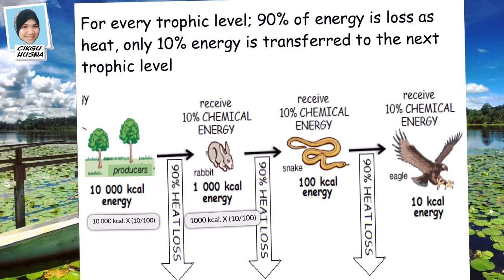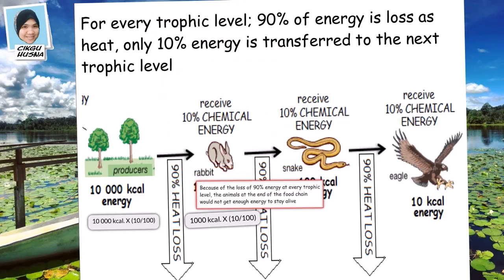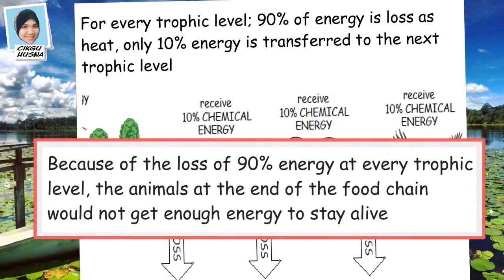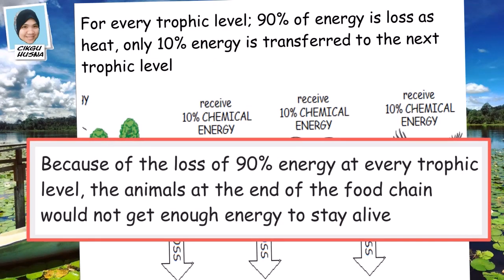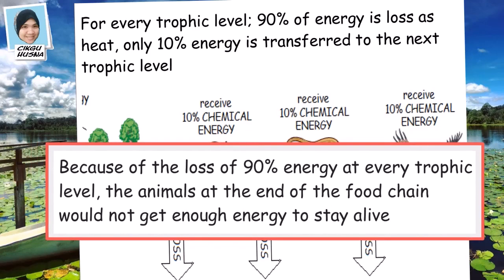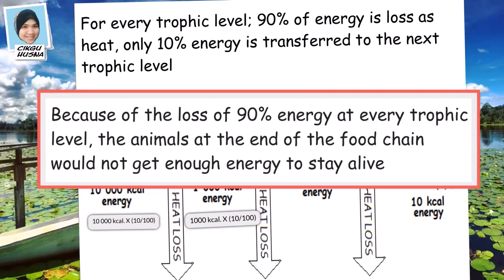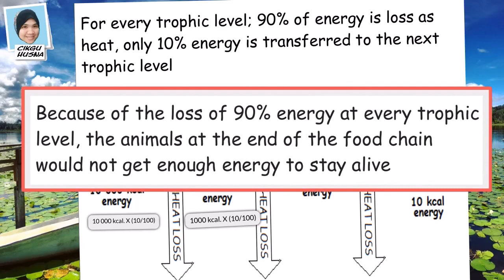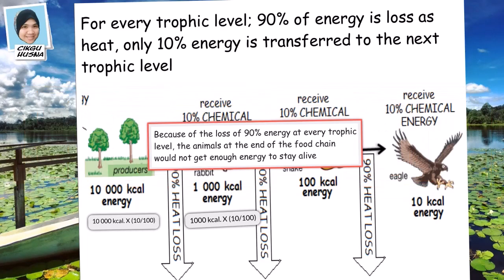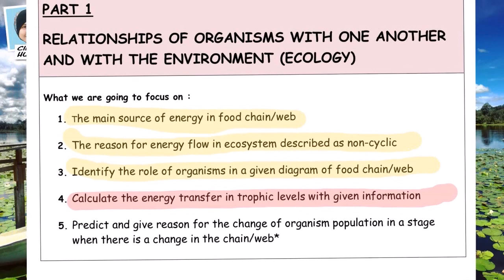This is why food chains are usually short. Because of the loss of 90% energy at every trophic level, animals at the end of the food chain would not get enough energy to stay alive.